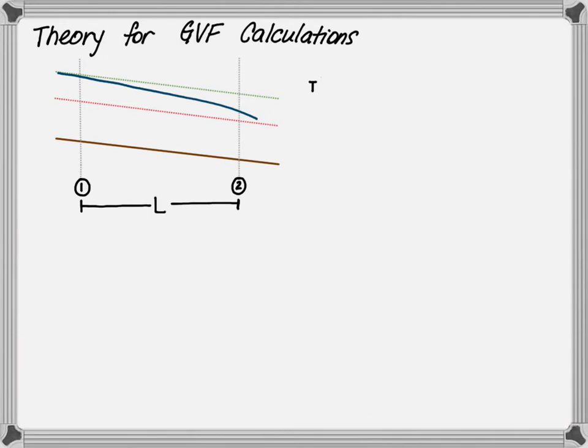Let's discuss the theory for gradually varied flow calculations. You're given a channel—in this case, a mild channel—where you have an actual water surface that looks like an M2 profile. You have two points, point 1 and point 2. These points represent the locations we'll use to determine the total length of the water surface profile. The total energy at point 1 equals the total energy at point 2 plus the friction slope.